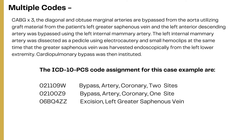Multiple codes are required to completely code the procedures performed. We would need one code for the bypass of the diagonal artery and obtuse marginal artery, since both were bypassed from the aorta using a saphenous vein graft. The left anterior descending artery bypassed using the left internal mammary artery (LIMA) would be coded separately because there is no device value in this bypass procedure. The third code would be for the graft obtained from the left leg — the left greater saphenous vein — coded with the root operation excision. Three codes are required to complete this scenario.